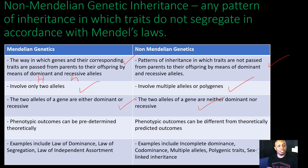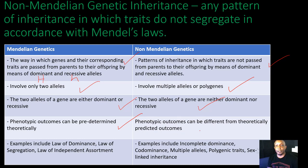In Mendelian genetics, the phenotypic outcomes can be predetermined theoretically — you can predetermine this by putting together a Punnett square, which gives you your phenotypic ratios and genotypic ratios of offspring. But in non-Mendelian genetics, the phenotypic outcomes can be different from theoretically predicted outcomes, making it very challenging to predict a person's eye color, hair color, or height.